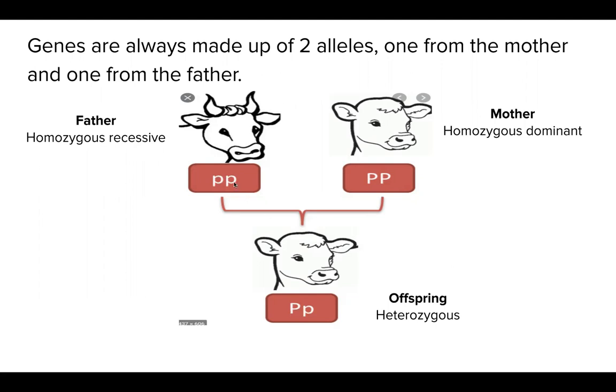In this example, we know that the dad would donate a recessive allele and the mom would donate a dominant allele, making the offspring heterozygous.